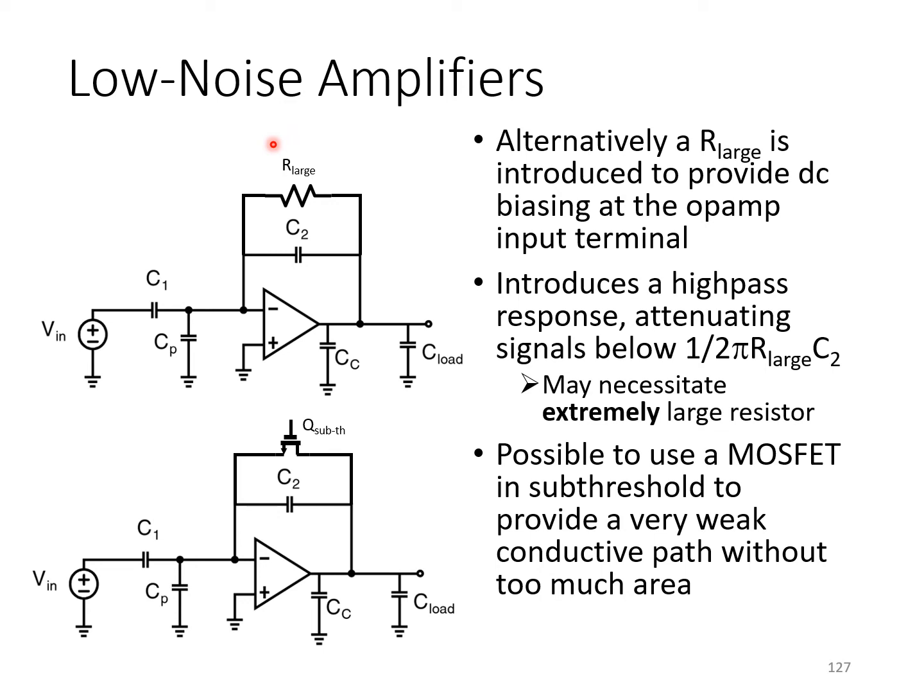Very large value resistors in integrated circuits can consume a large amount of area. In some implementations, they replace R_large with a MOSFET, biased in sub-threshold. This can provide a very weak conductive path from the op-amp output to the negative terminal that allows some small current to flow and establish a proper operating point here, but without too much area.